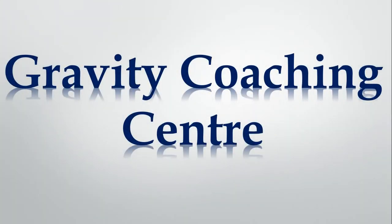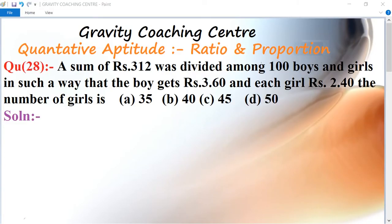Welcome to our channel Gravity Coaching Centre. Quantitative Aptitude, chapter Ratio and Proportions, question number 28. A sum of Rs. 312 was divided among 100 boys and girls in such a way that each boy gets Rs. 3.60 and each girl Rs. 2.40. The number of girls is: this question means Rs. 312 is divided among girls and boys.